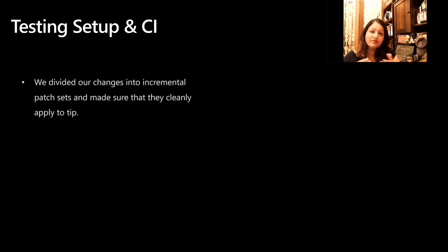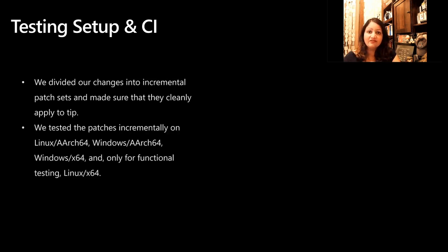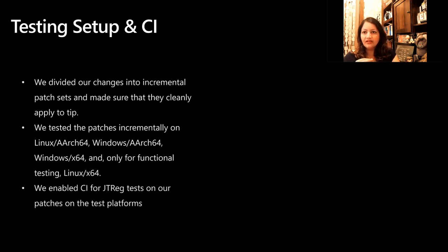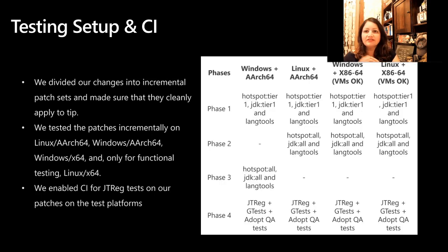Let's jump to testing and benchmarking. We divided our changes into incremental patches and wanted to make sure they cleanly applied to tip. To provide a complete set of test results, we made sure other platforms saw no regression — testing on Linux ARM64, Windows ARM64, and Windows and Linux x86-64. We enabled CI for JDREG tests, which is the regression test harness. This shows each phase of enablement, with the Adopt QA test still to be enabled as the last phase.